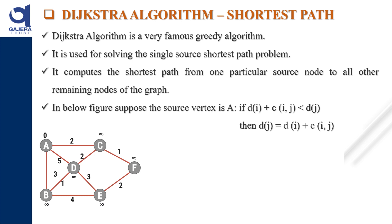In the figure below, suppose the source vertex is A. If distance of i plus cost from i to j is less than distance of j, then the distance of j is updated to equal distance of i plus cost of i and j.